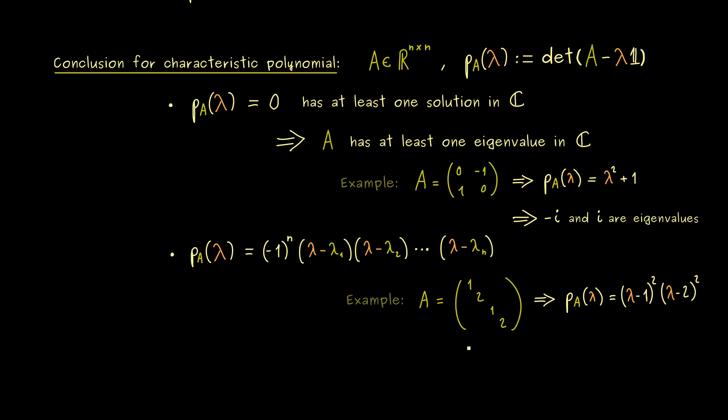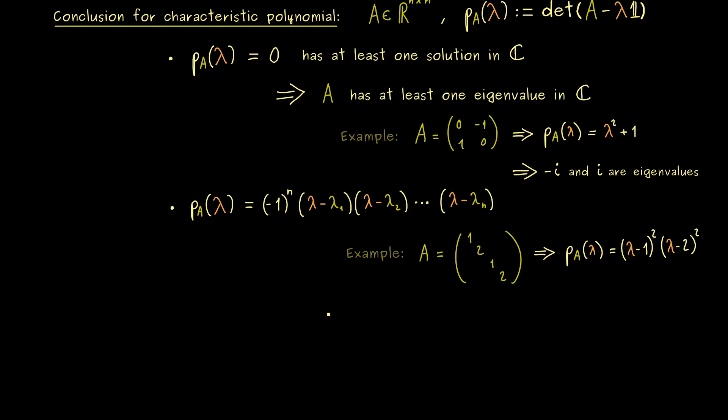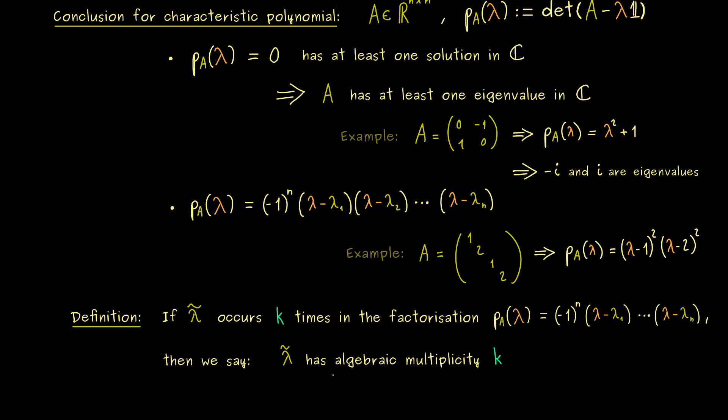So you see this concept is not so complicated and I would say let's put that into a definition. Now we already know the algebraic multiplicity tells us how often the eigenvalue occurs in the characteristic polynomial. So let's say we have an eigenvalue, a zero of the characteristic polynomial, called λ̃. If that occurs k times in the factorization, then this k is called the algebraic multiplicity of λ̃.